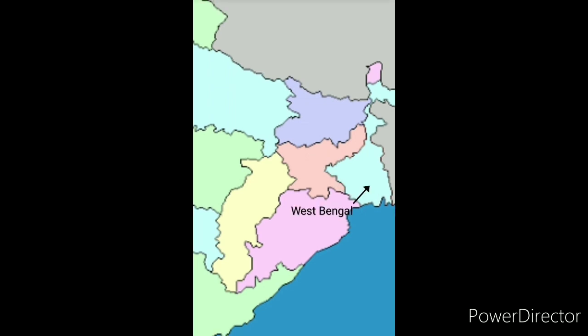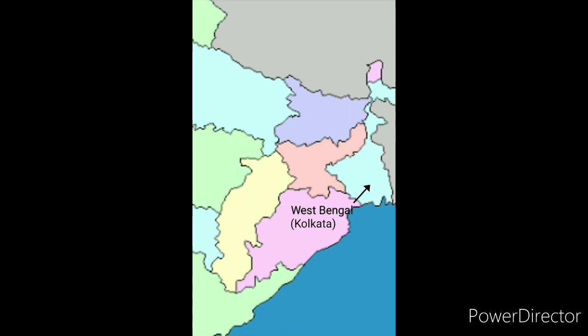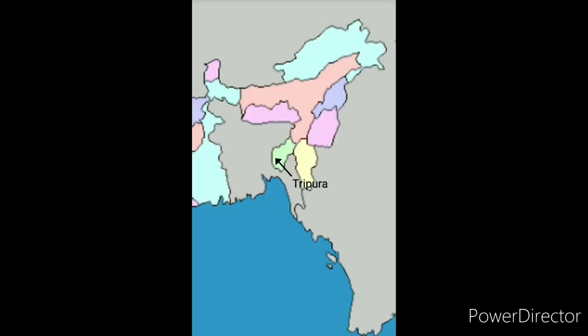Then we have West Bengal on the right side of Jharkhand and its capital is Kolkata. Heading towards the northeastern states, we have a total of seven sister states in the north east of India.